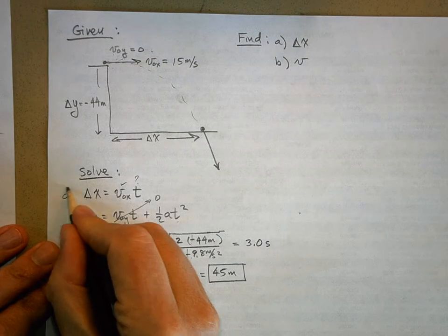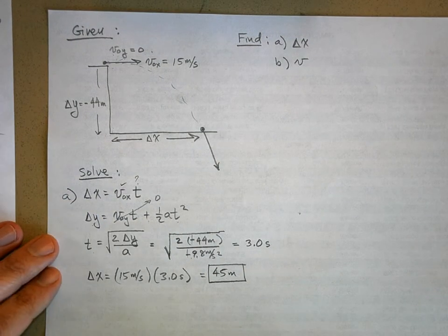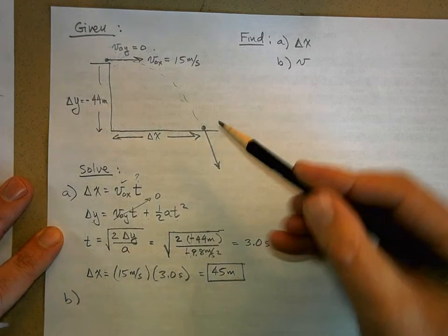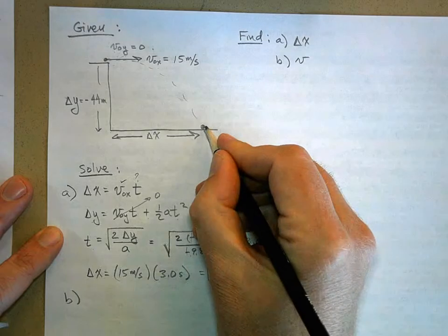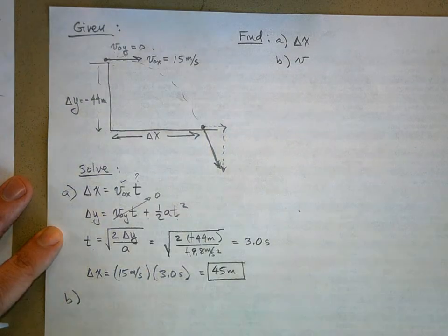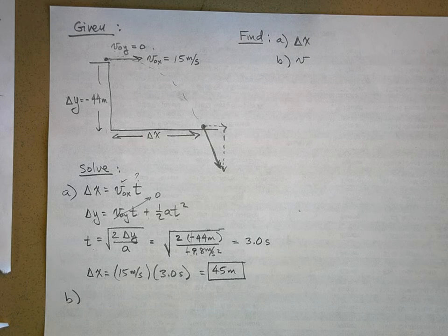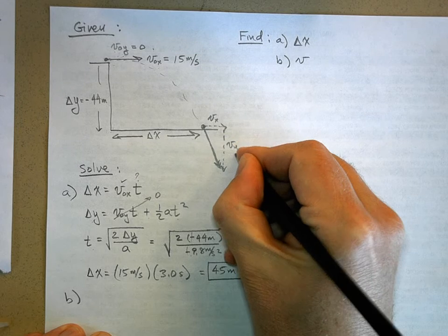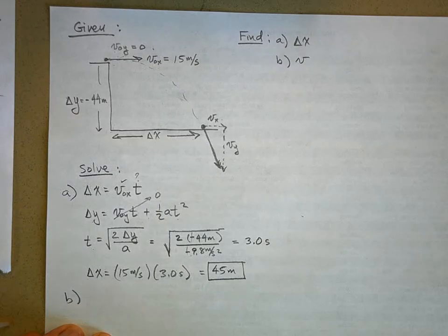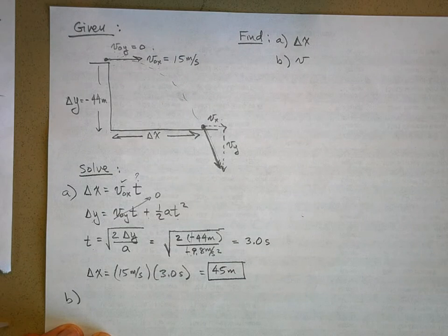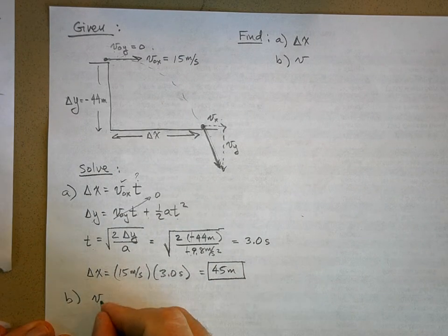That's the answer for part A. Part B is a bit trickier. Looking at our picture, the final velocity has both an x component and a y component. Just as we broke forces into x and y components before, we now break velocities into x and y components. If we know the final velocity in x and y, we can find the overall final velocity using the Pythagorean theorem.